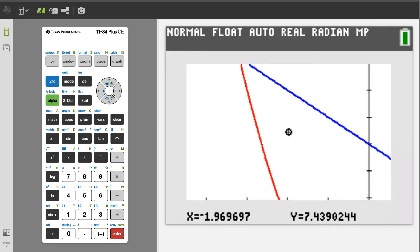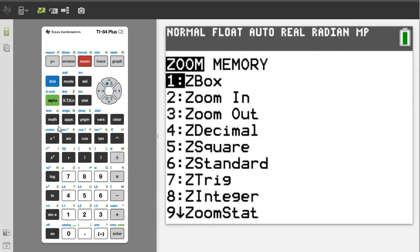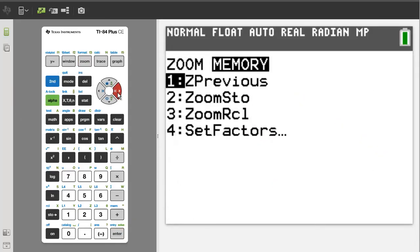That zoom is too much. To go back to where the graph was, press the zoom button. Arrow over to memory and we want number 1, Z previous. Press the 1 button.